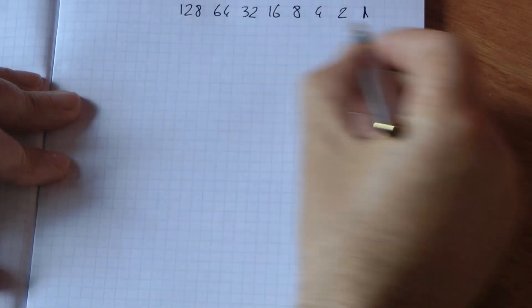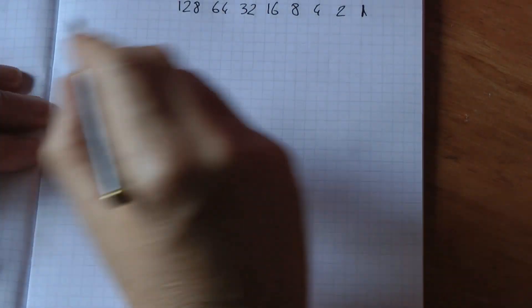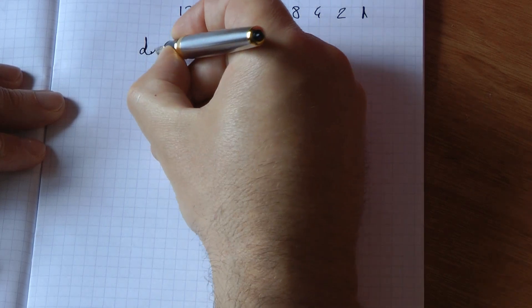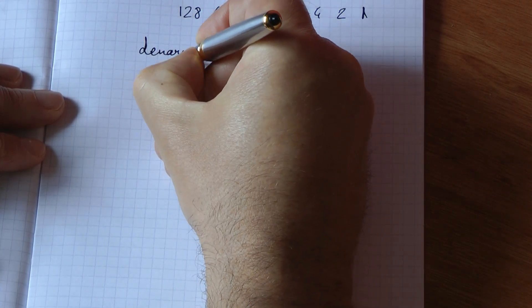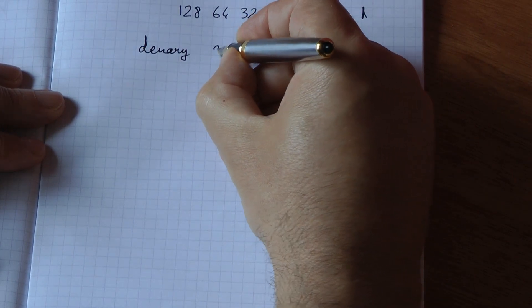So you've got that on a corner somewhere on a piece of scrap paper. Let's take a number, a denary number - a number like we're used to in base 10 - let's say 200.